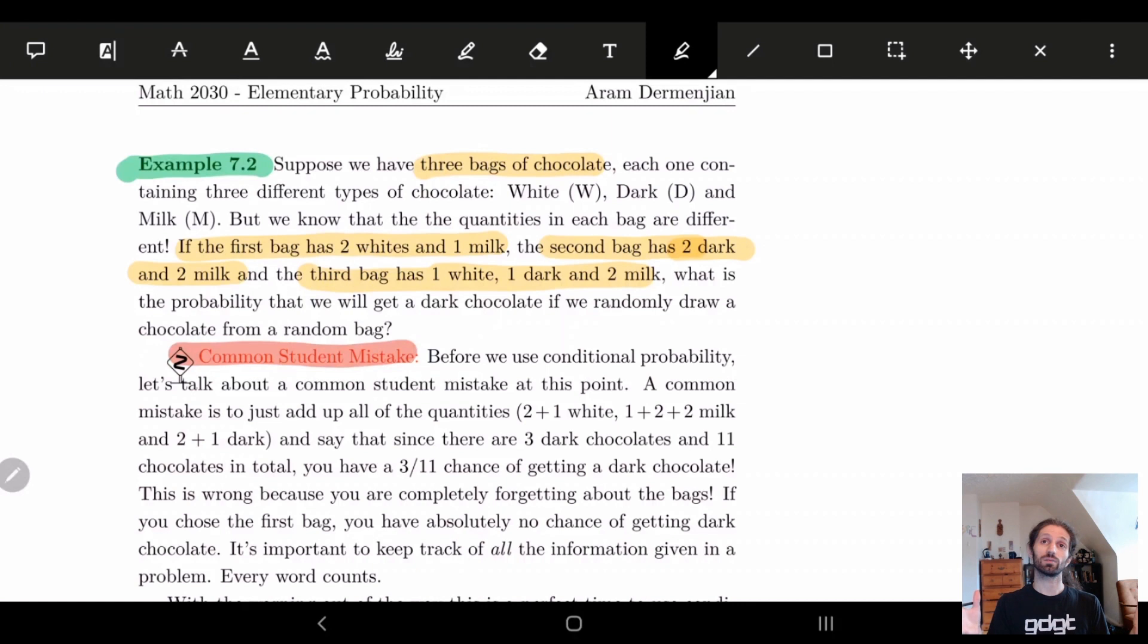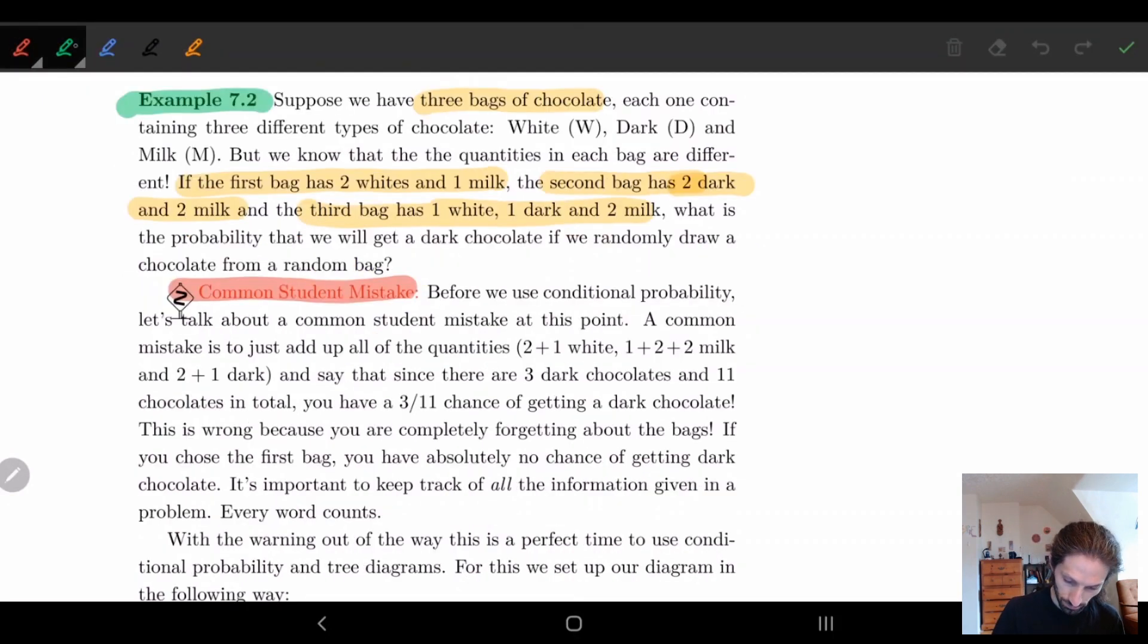Now if all these chocolates were in one bag, that would make sense. But imagine going to a little extreme. Think about having three bags where one is all white, one is all dark, and one is all milk. The dark one has three dark chocolates, the milk one has five milk chocolates, and the white one has three white chocolates.